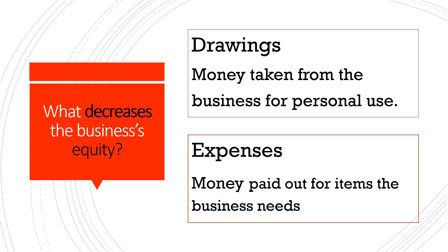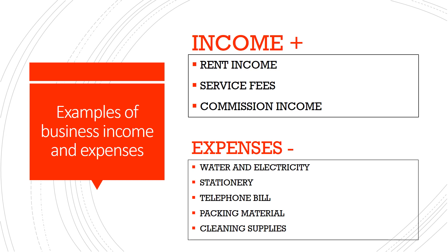So what causes a business's equity to decrease? It decreases when the owner takes money out of the business for personal use. If an owner withdraws money from the business's bank account, that means that his equity is decreasing. Whenever the owner has to pay for items from the business — for example, water and electricity — the business's equity will decrease. Here are some examples of income and expenses that a business might have — I'll give you a minute to have a squiz at them.